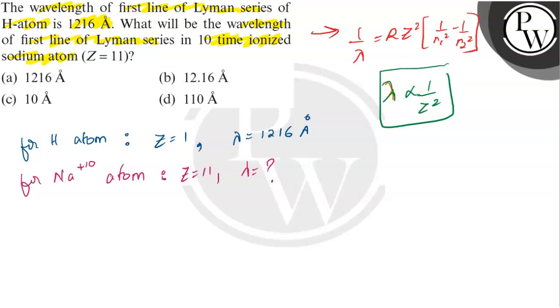This implies that lambda of H by lambda of Na plus 10 definitely is equal to 11 into 11 divided by 1 into 1.